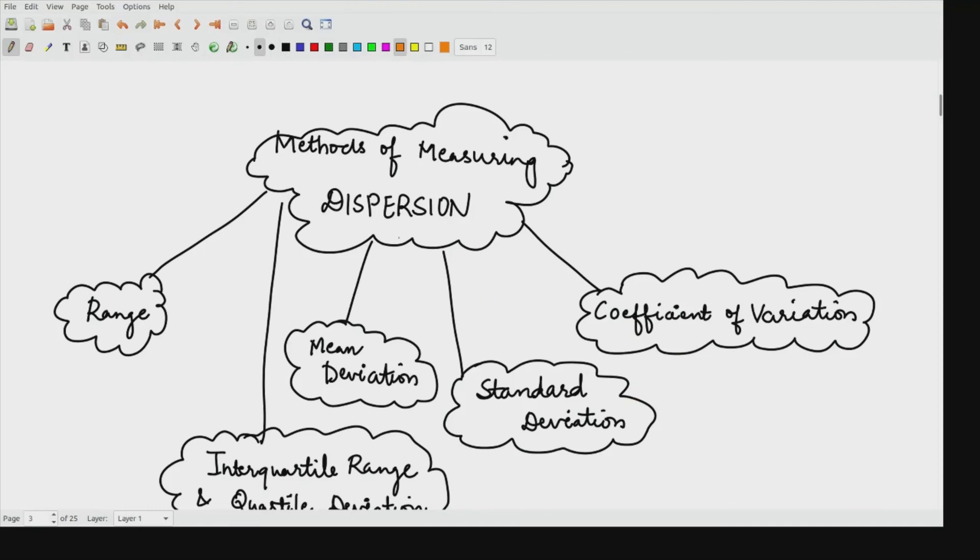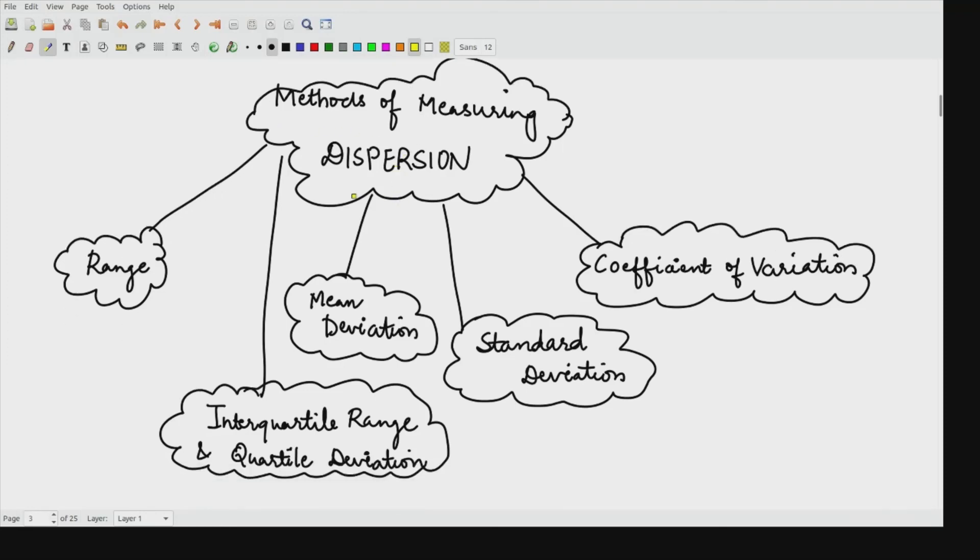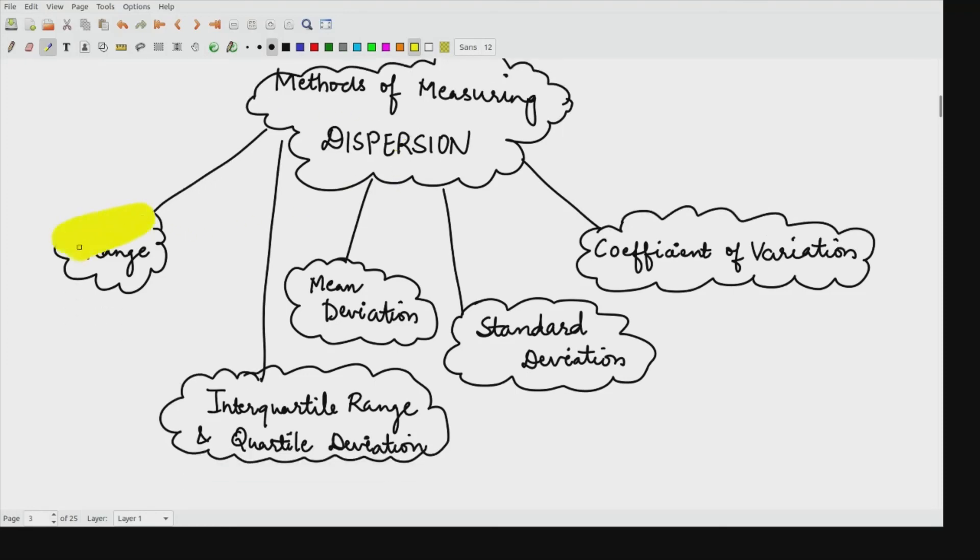How many kinds of methods of dispersion are present here with us? The methods of dispersion are mainly these five types. First is this range, second is this interquartile range and quartile deviation, third one is mean deviation, fourth one is this standard deviation, and fifth one is the coefficient of variation. These five quantities are present with us.